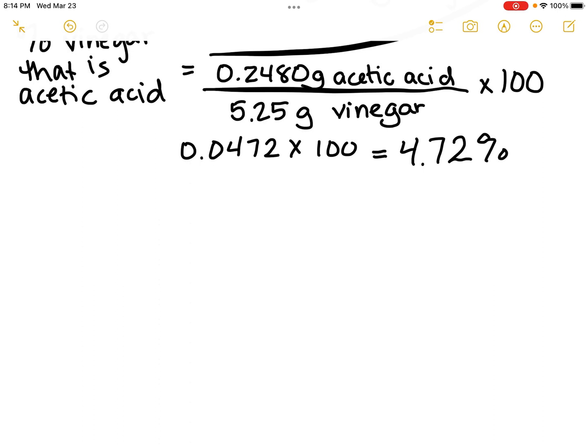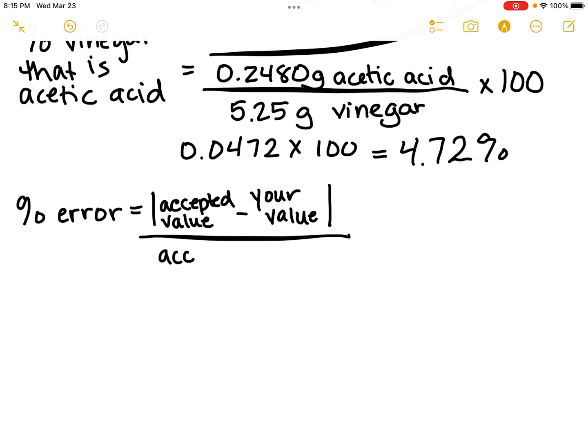I want you to determine your percent error. Your percent error is equal to the absolute value of the accepted value minus your value, divided by your accepted value.